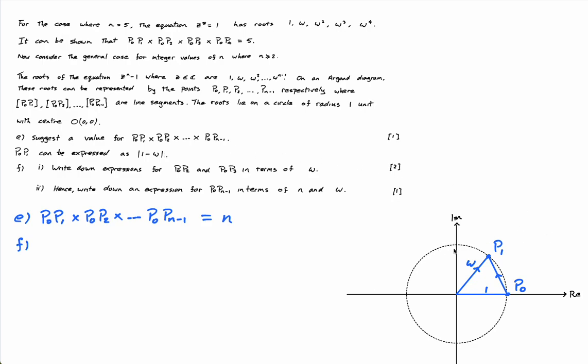But similarly, imagine I have the next one here, which would be p2. This guy is omega squared.